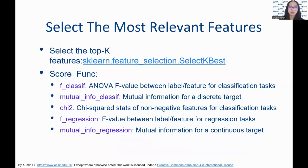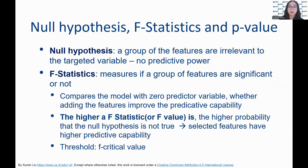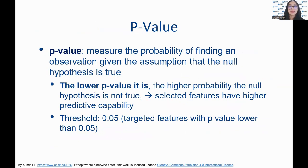A popular way to select the top k relevant features is to use scikit-learn's feature_selection.SelectKBest. When selecting the top k relevant features, the null hypothesis is that a feature is irrelevant to the targeted variable. F-statistics measure if a feature is relevant or not — the higher the score, the higher the predictive power a feature has. We are looking for features with high F-values. The p-value measures the probability of the null hypothesis being true; we look for features with low p-values, since they imply higher predictive capabilities.